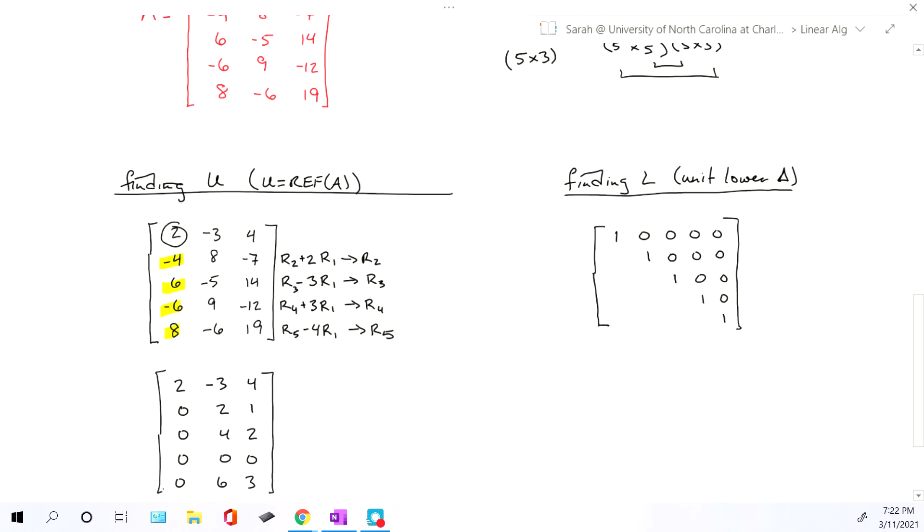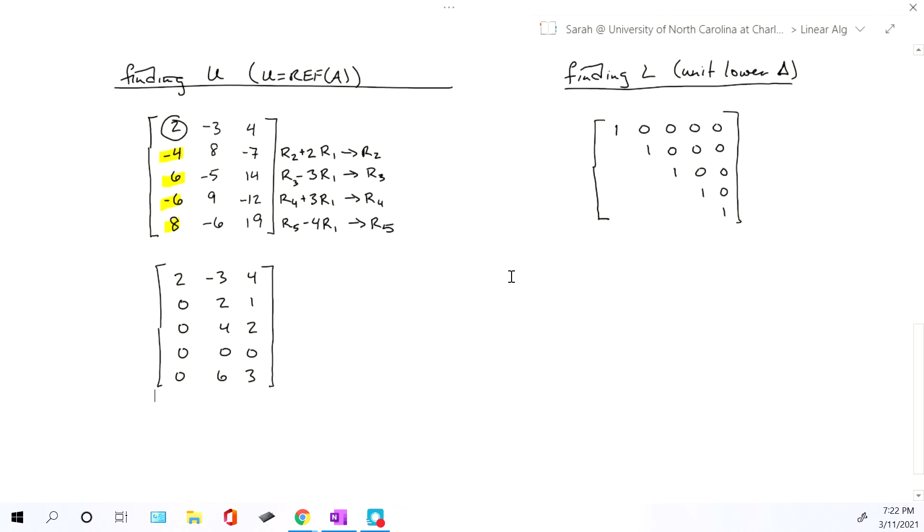Now at this stage, you can either continue the process and row reduce the new matrix that we have with the next pivot, which will be here at 2, or you can go ahead and track what we just did over in our matrix L. Now remember what you do? You grab all of these numbers that you multiplied or scaled row 1 by and put them in the first column of the matrix L. In other words, under that very first pivot right here in matrix L. But remember, you flip the signs. So instead of 2, negative 3, positive 3, negative 4, you'll have negative 2, positive 3, negative 3, and positive 4.